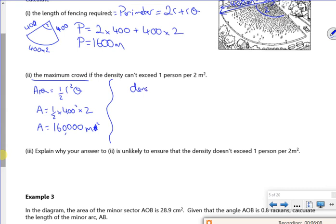So the density is - hang on, I've done this the wrong way around. So the density is the area over the number of people. So if I switch that over, the number of people will be the 160,000 divided by 2. So I've got the maximum crowd of 80,000 people.